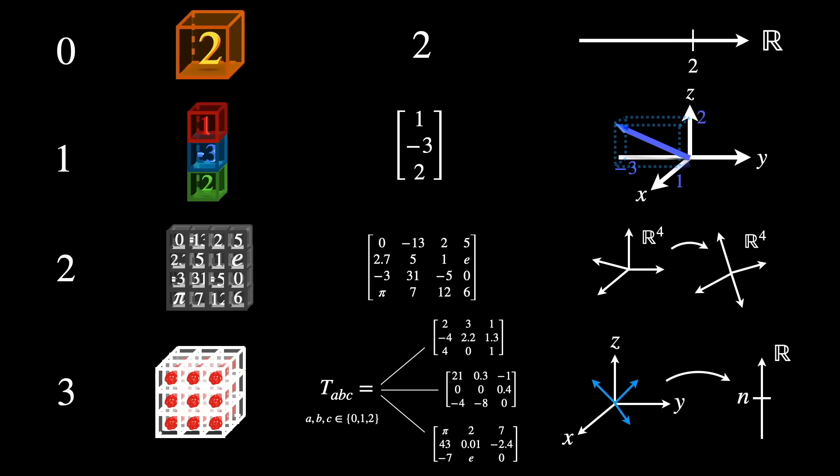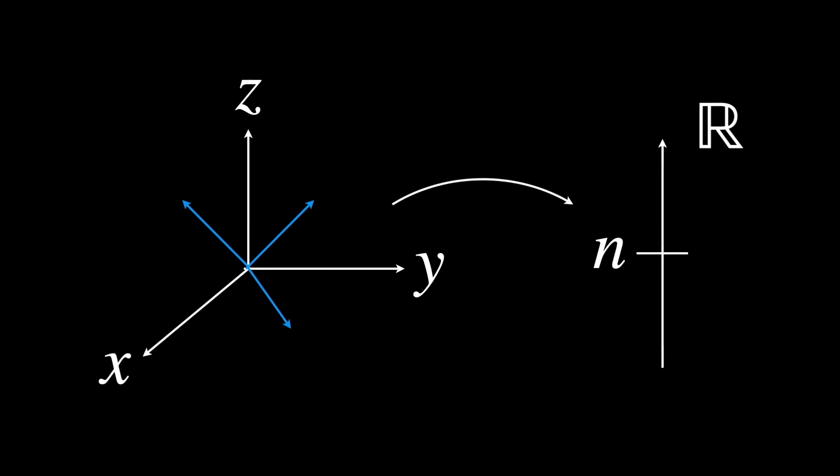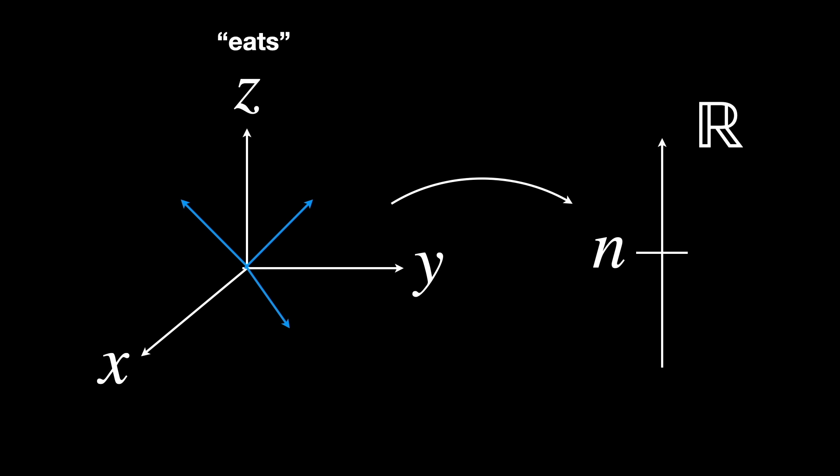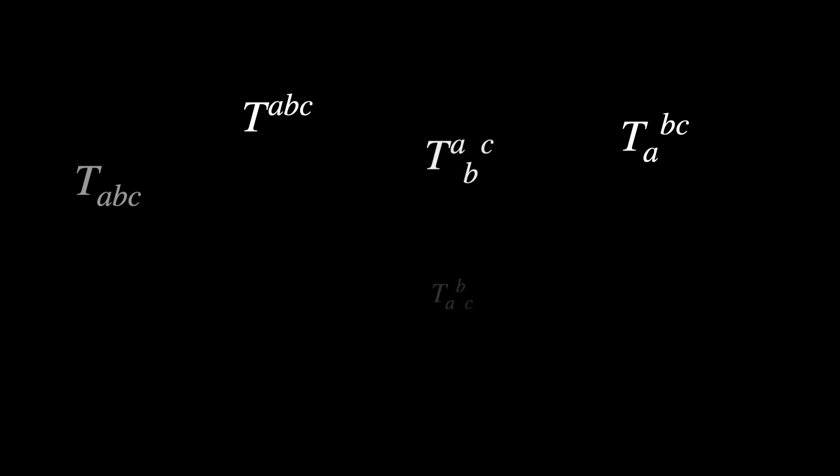Actually not all tensors of rank 3 eat 3 distinct vectors, as shown here, and spit out a scalar. There are some tensors of rank 3 that eat vectors and spit out vectors too, or that eat and spit out covectors. These distinctions come from the concepts of covariant and contravariant basis. But before that, what's a covector anyway?